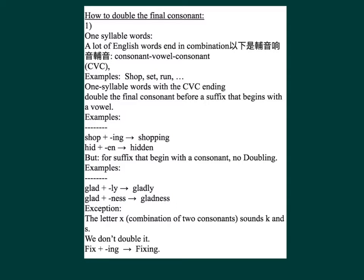Exception: the letter X is a combination of two consonant sounds, K and S, so we don't double it. Fix + ING = F-I-X-I-N-G, fixing.